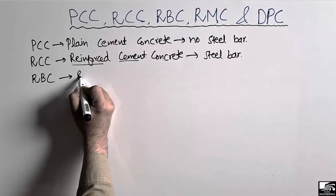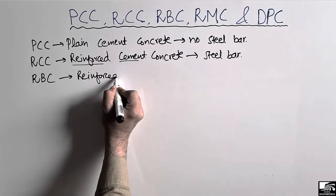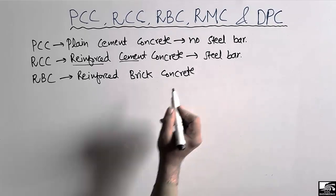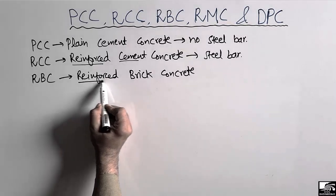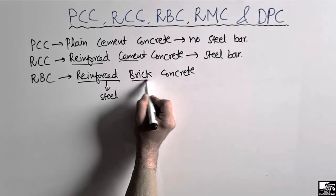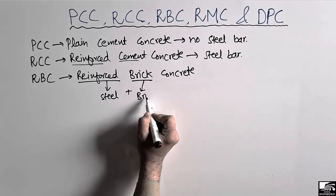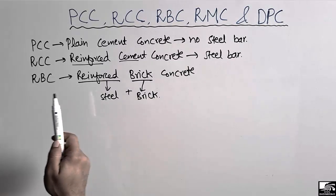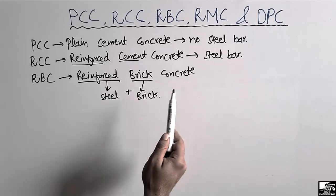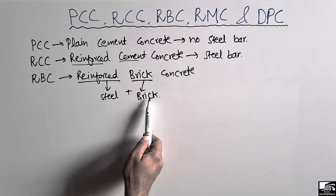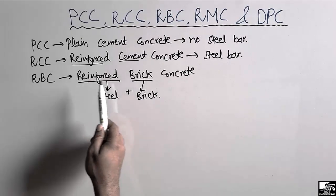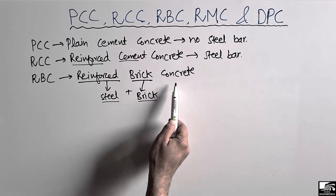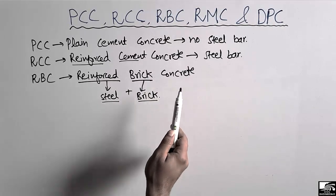The third term is RBC, known as Reinforced Brick Concrete. This is a type of concrete that is the composition of reinforced steel bar used with brick. We are using two different materials: steel and brick. This type of construction is not common in daily life, but sometimes we use the combination of reinforced steel bar and brick to make a structure, which is known as RBC or Reinforced Brick Concrete.